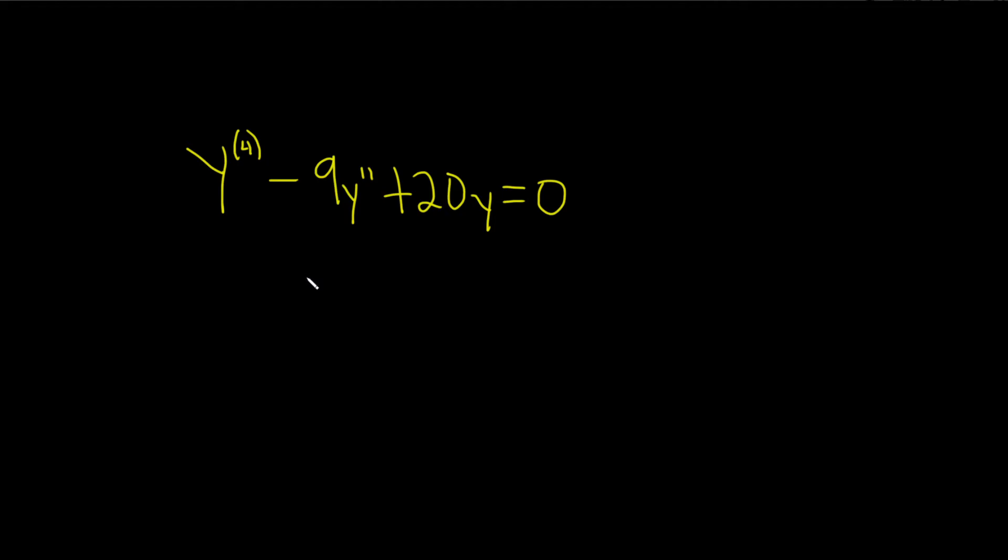In this problem, we have a homogeneous differential equation with constant coefficients, and it's linear. So to solve it, we're going to start by finding what's called the characteristic or auxiliary equation.